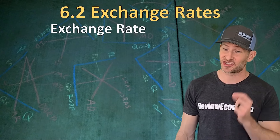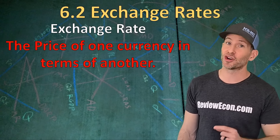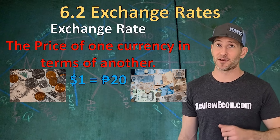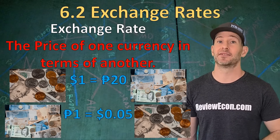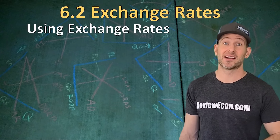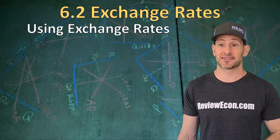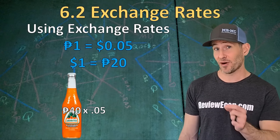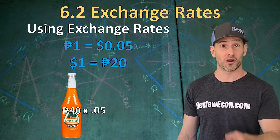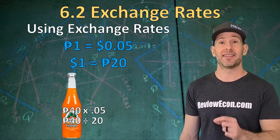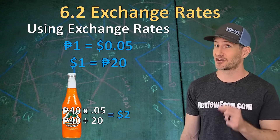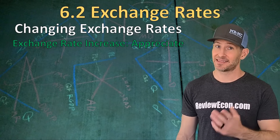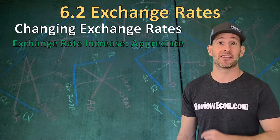The next thing we're going to look at is exchange rates. An exchange rate is the price of one currency in terms of another currency. Right now, the exchange rate for the United States dollar is approximately 20 Mexican pesos. If you flip it around, that means one Mexican peso is worth approximately five American cents. You can use that exchange rate to calculate the price in U.S. dollars of Mexican made goods. Let's say we have a soda made in Mexico and it costs 40 pesos. If we multiply that by $0.05 per peso, or divide it by 20 pesos per dollar, that gives us a price of two U.S. dollars. Of course, exchange rates do change, and when the value of a currency increases, we say that the currency has appreciated — meaning it's more valuable.